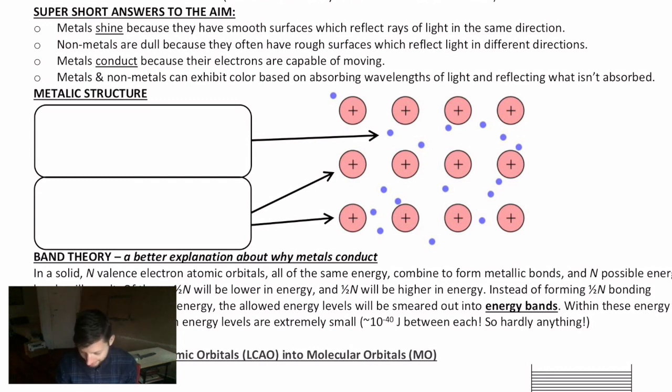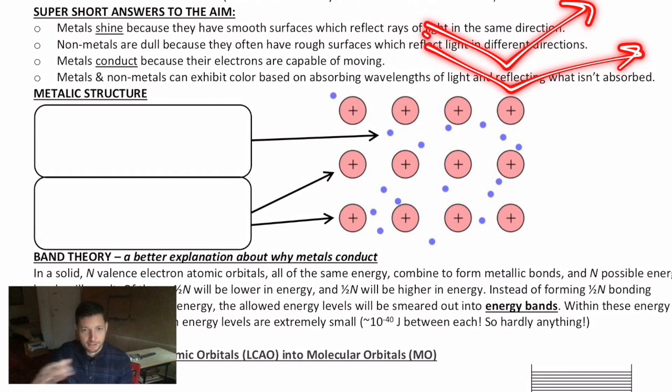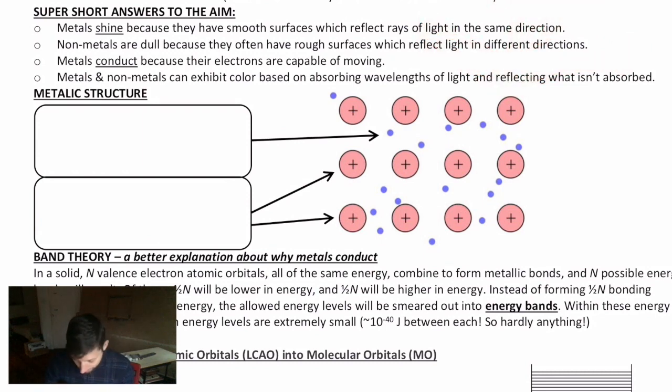So if you take a look at your notes, super short answers to the aim. Why do metals shine and why do metals conduct? So metals we can often think of as being shiny. They are lustrous. Often they have smooth surfaces and those reflect rays of light all in the same direction. That's what makes something shiny. If you have reflection off of a surface where they're all in the same direction, things that are very rough on the surface will still reflect. But if the reflections are all in very different directions, then you get not a very shiny, lustrous surface.